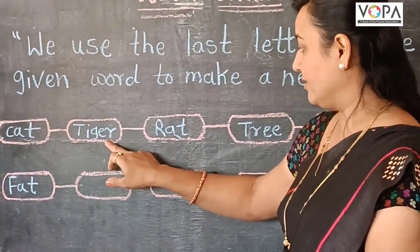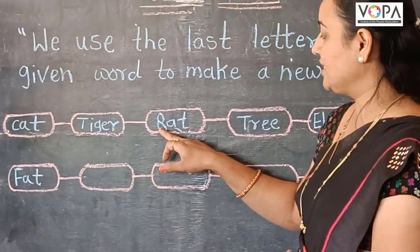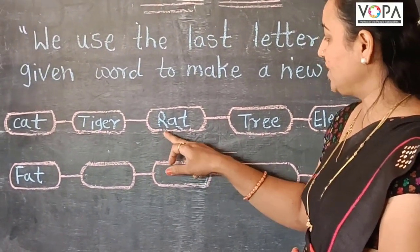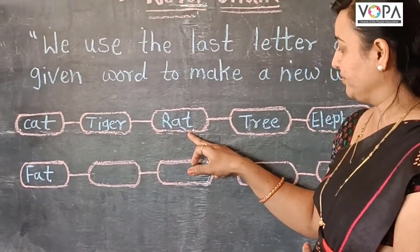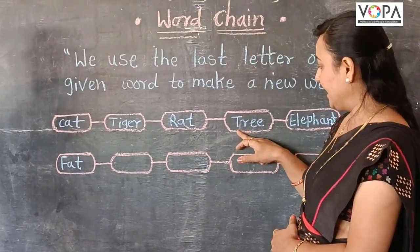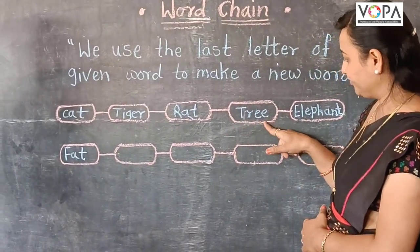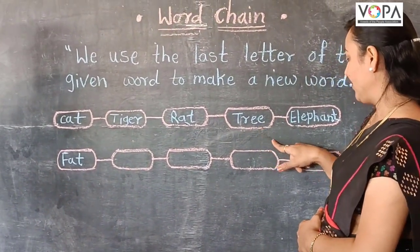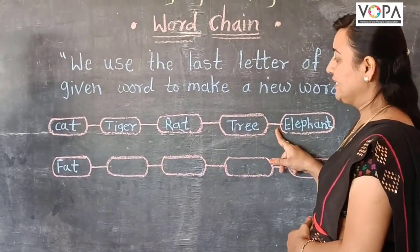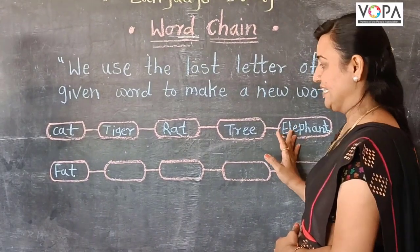Which is the last letter in 'tiger'? R. So we write 'rat,' because rat starts with R. And which is the last letter in 'rat'? T. That's why we write 'tree.' And which is the last letter in 'tree'? E. That's why we write 'elephant' — E for elephant. In this way we complete the Word Chain.